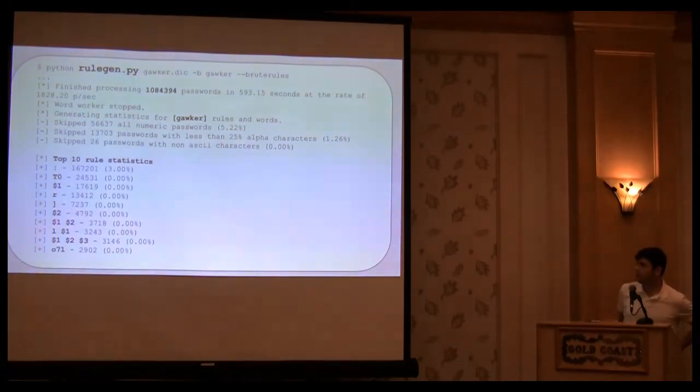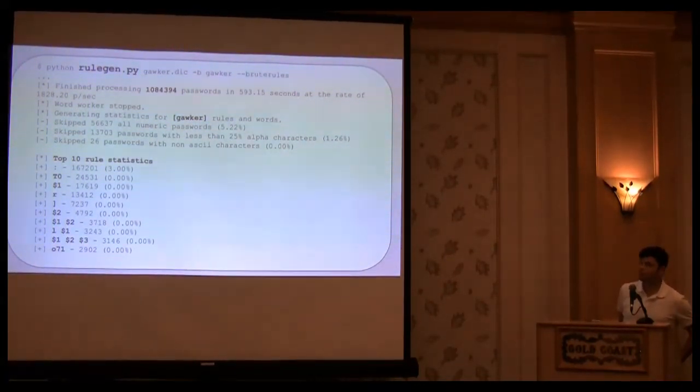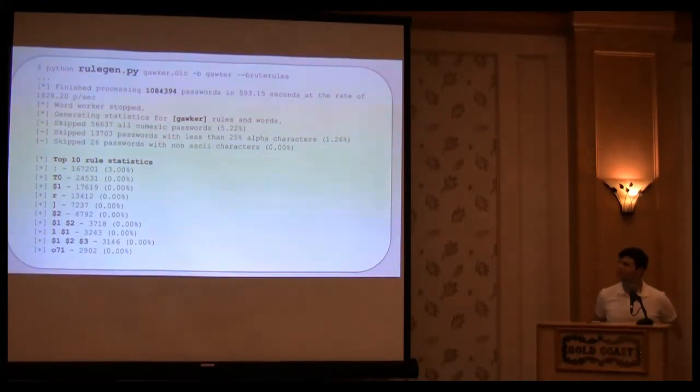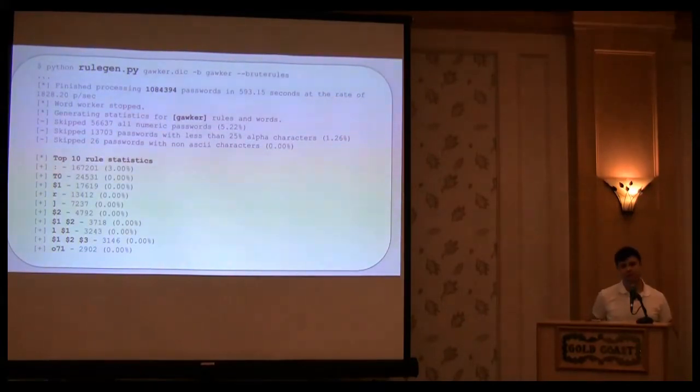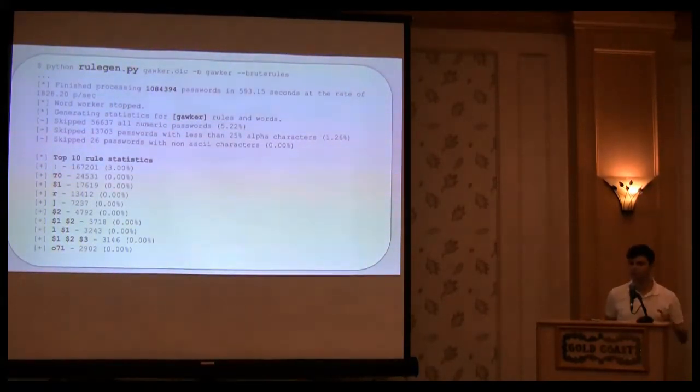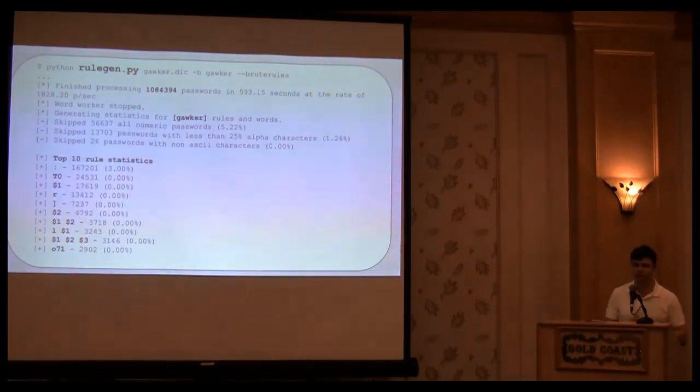Again, you can take a whole list, like Gawker, and you can feed it to RuleGen, and eventually, this is pretty slow. But, actually, the latest release of RuleGen finally implements multi-processing. It's actually more or less usable on competition, so you can perform recycling attacks. I'll show you in a second.